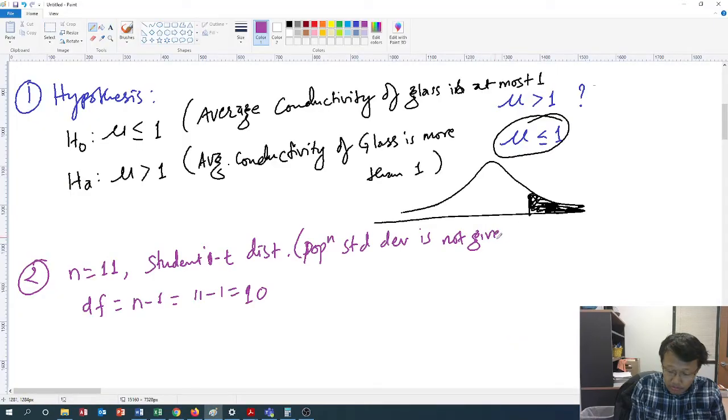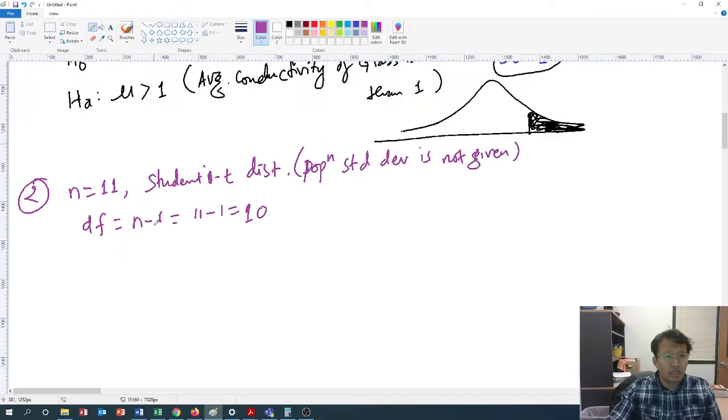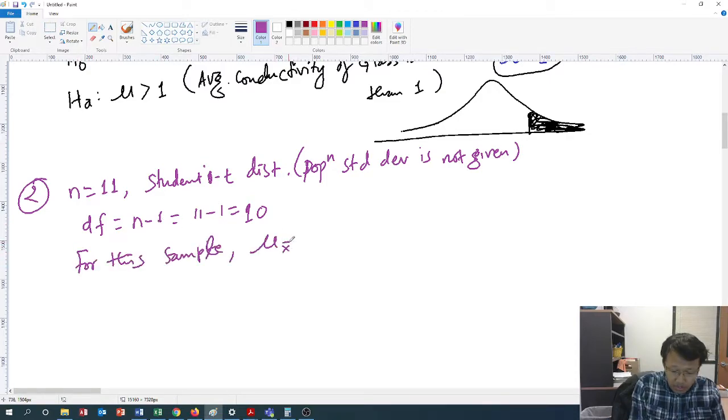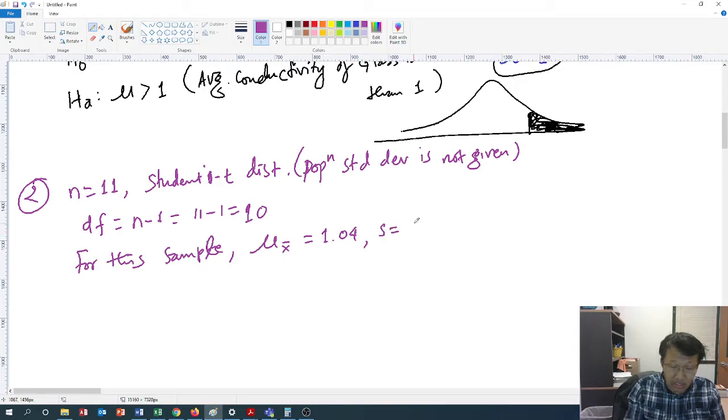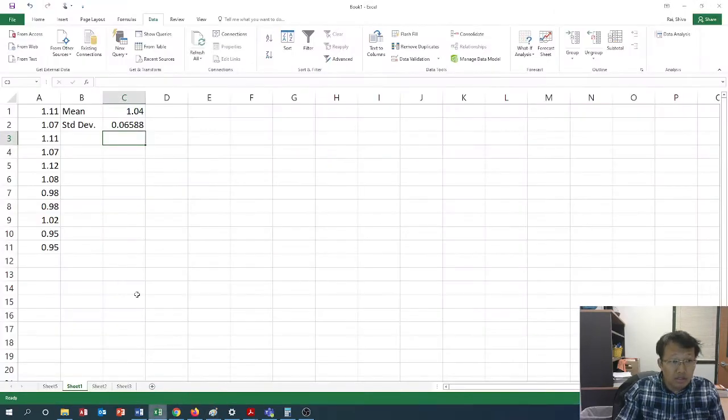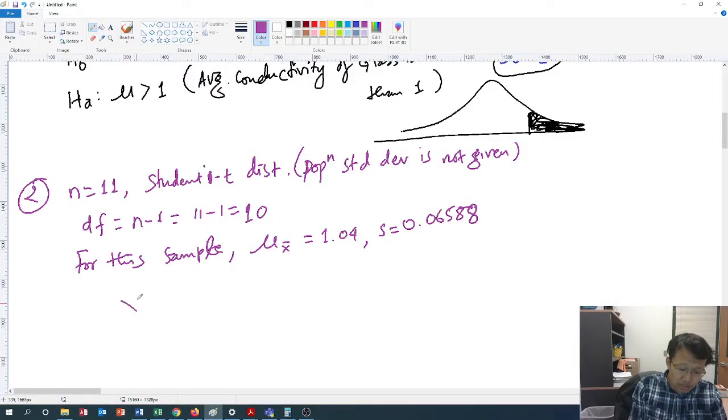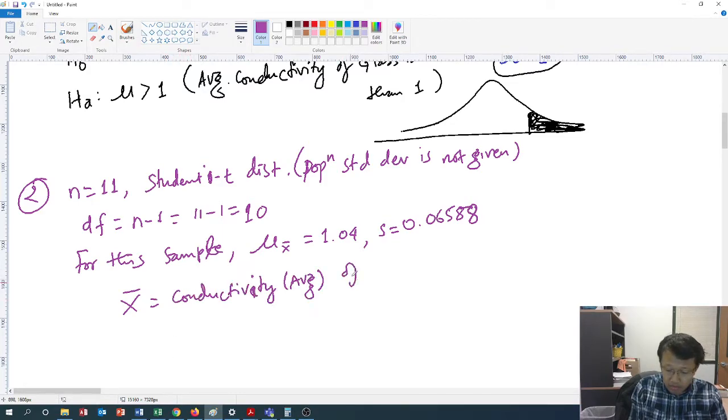Due to this fact, we will just go for student's t-distribution. Now we know that for this sample, μ of x-bar is simply 1.04, and the sample standard deviation is 0.06588. Of course, this distribution x-bar describes the conductivity of the glass.